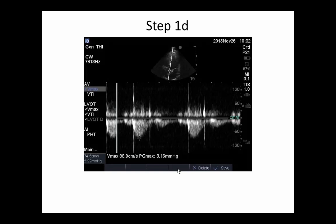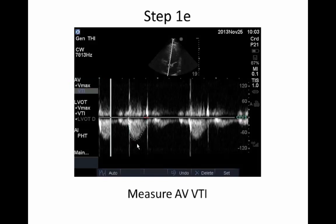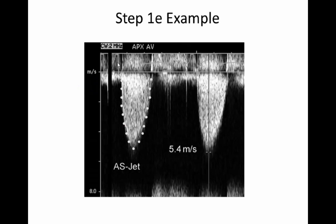Get into your cardiac calculation package in the aortic valve section. First you can measure Vmax and save that. Then choose the VTI setting — velocity time integral — and trace the velocity profile through your aortic valve. Here's an example of tracing around the whole aortic stenosis jet. You can see our scale has moved up to meters per second — we're at 800 centimeters per second, or 8 meters per second, to capture this high velocity aortic stenosis jet in this patient example.